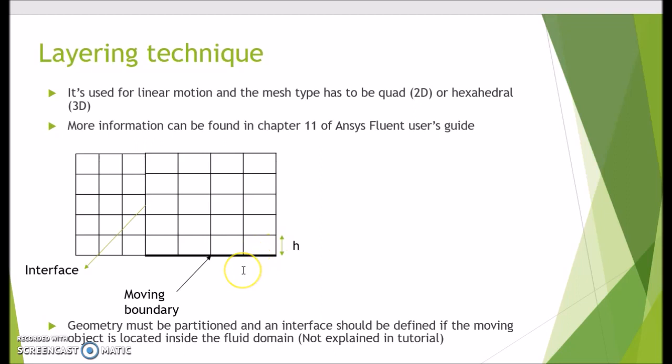One thing which is not fully covered in tutorials and the explanation is not enough is when you've got an object which is located inside the fluid. When this boundary is moving, there is an interface between moving zone and stationary zone and you have to create an interface. To do that, you have to partition your geometry and do some geometry work to create that interface. I created a video explaining this for a simple geometry and I'm gonna put it in the description right below this video.